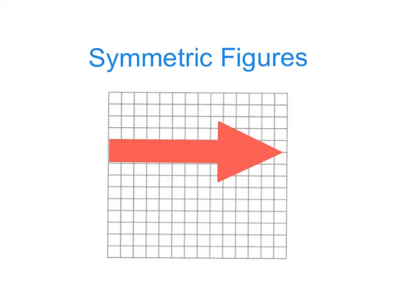So first we're going to look at symmetric figures. They are made of two identical parts that when folded in two, the fold line is called the line of reflection. So here this would be the fold line.